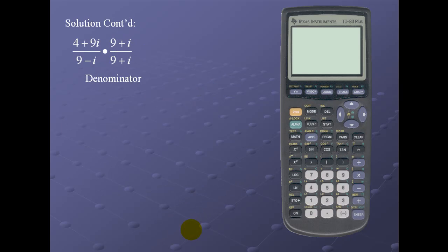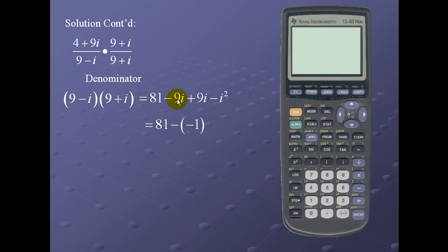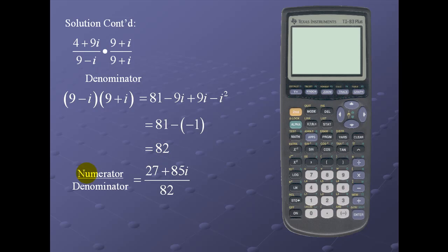Now let's look at the denominator. We're dealing with a sum and difference of squares, so we use the FOIL method. The innermost and outermost terms cancel, and applying the fact that i² = -1, the denominator simplifies to 82. Putting numerator and denominator together, we have (27 + 85i) / 82. Written in complex form, that's 27/82 + (85/82)i.